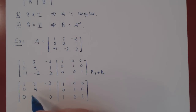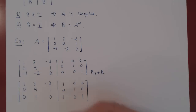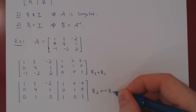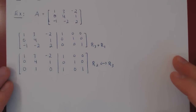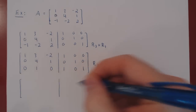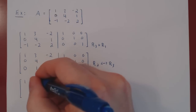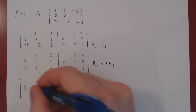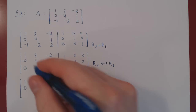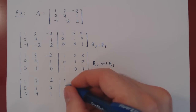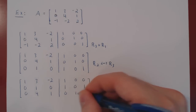To obtain our second leading 1, rather than multiplying row 2 by a quarter, let's swap row 2 and row 3 since we already have a 1 there. We interchange the second and third rows. Copying the first row unchanged, and swapping: the new row 2 becomes [0, 1, 0 | 1, 0, 1], and the new row 3 becomes [0, 4, 1 | 0, 1, 0].